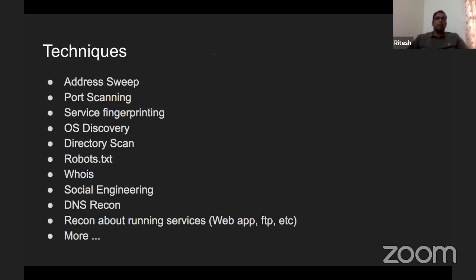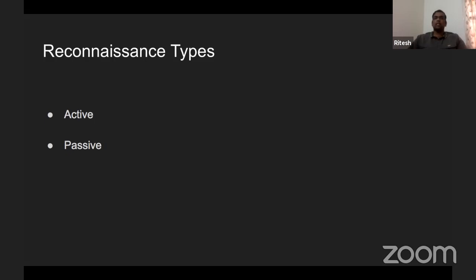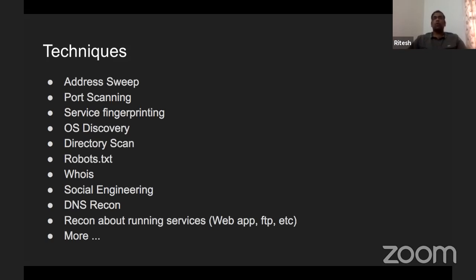In the cyber world, the same active and passive reconnaissance types apply. Different techniques can be used. Address sweep: scanning over a network range to find what addresses are available. Port scanning: given a server, finding what services are running on which ports, which ports are open, and which could be vulnerable. Once we find which services are running, we can find vulnerabilities present on that particular port or service.